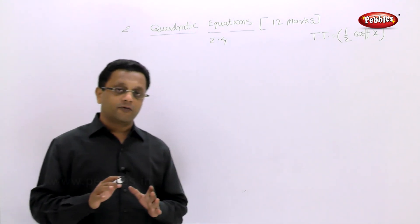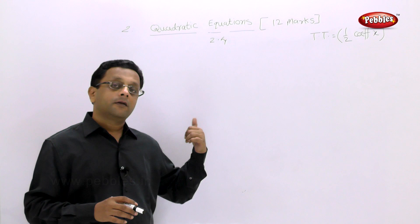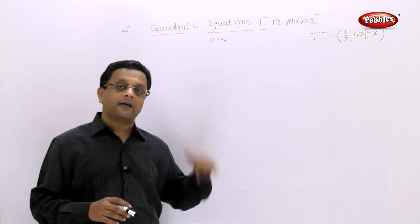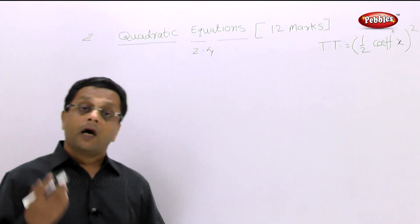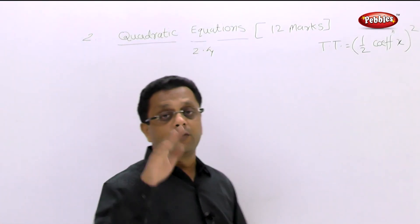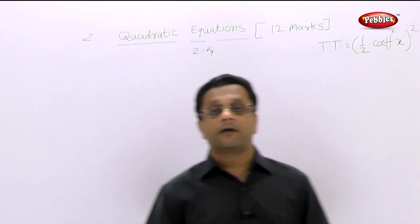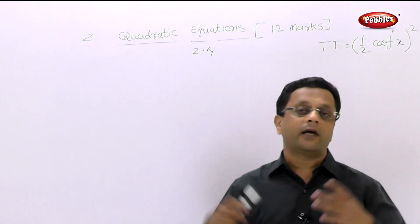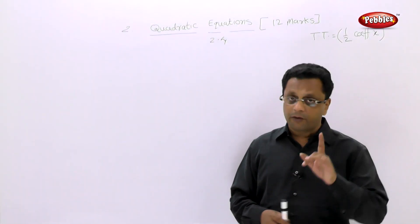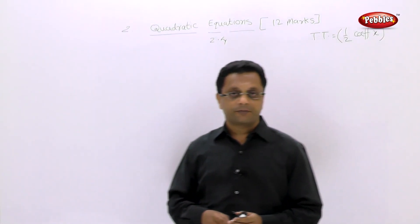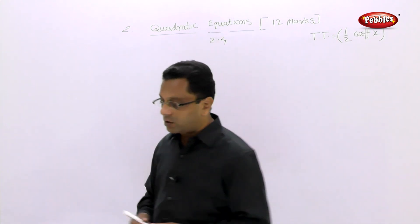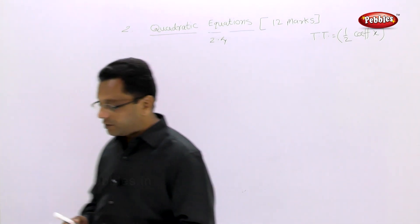Only after ensuring the coefficient is 1 do you find the third term and add it. After adding the third term, if you get a denominator you can eliminate it, but not before. Now let us solve the examples.